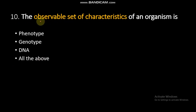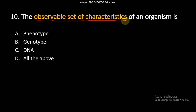Question number 10: The observable set of characteristics of an organism is? The observable characteristics — those that are visible — are called phenotypic characteristics. So, option A is the right answer.